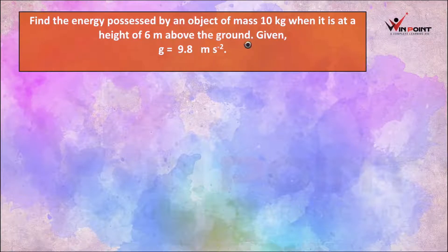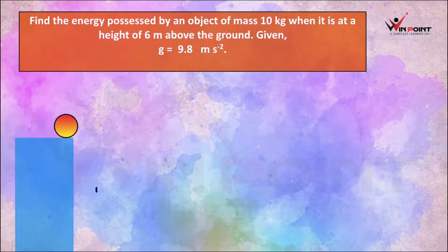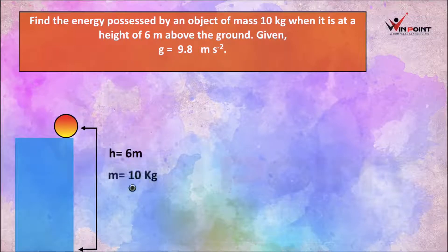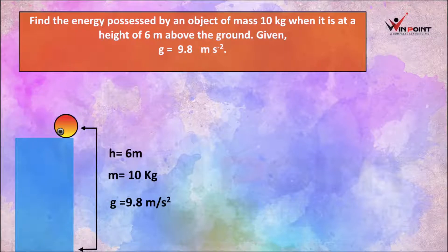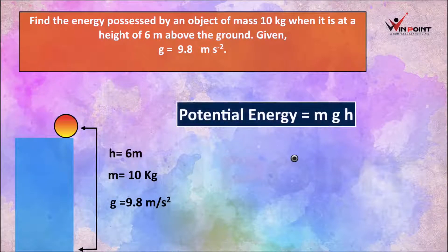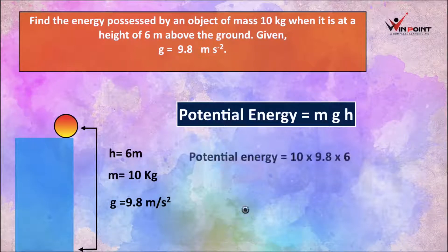Find the energy possessed by an object of mass 10 kg when it is at a height of 6 meters above the ground. Given g equals 9.8 m/s squared. When an object is at a height, it has potential energy. Potential energy is equal to mgh. The value of m is 10 kg, g is 9.8, and h is 6. Substituting: PE equals 10 times 9.8 times 6, which gives potential energy equal to 588 Joules.